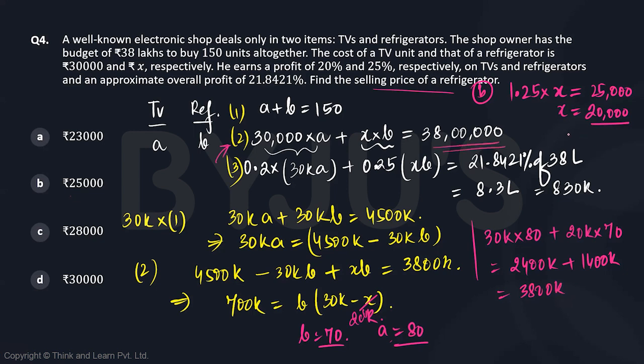So taking the selling price of a refrigerator to be 25,000 gives us the answer. Option B is correct.